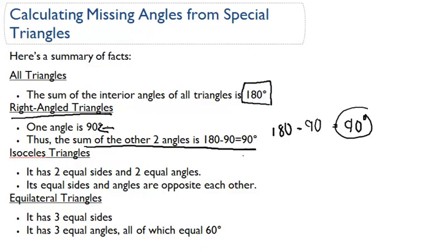An isosceles triangle. Isosceles triangles have two equal sides and two equal angles. Its equal sides and angles are opposite each other. So in an isosceles triangle, I'll draw a very simple one here in the picture.